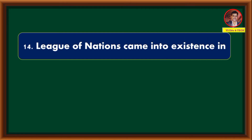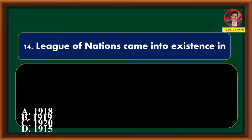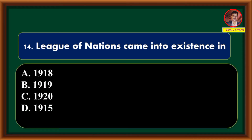The League of Nations came into existence in — 1918, 1919, 1920, 1915. Correct answer is option B: 1919.